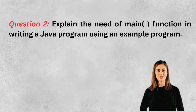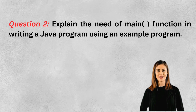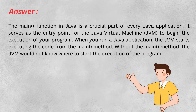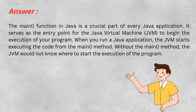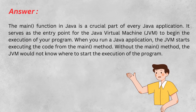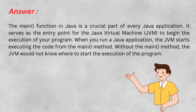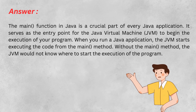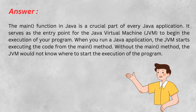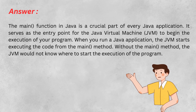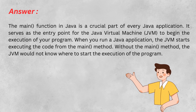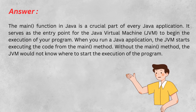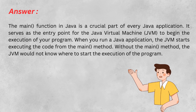Question 2: Explain the need of the main function in writing a Java program using an example. The main function in Java is the entry point for the Java Virtual Machine (JVM) to start executing a Java application. It's essential as it directs the JVM on where to begin program execution. Without the main method, the JVM would not know where to start.